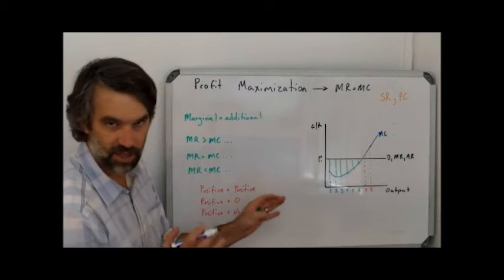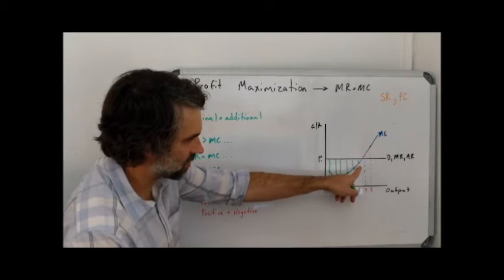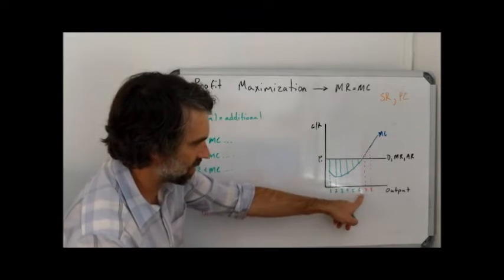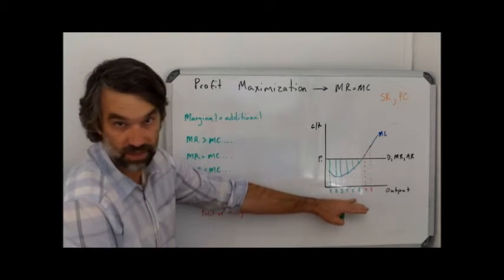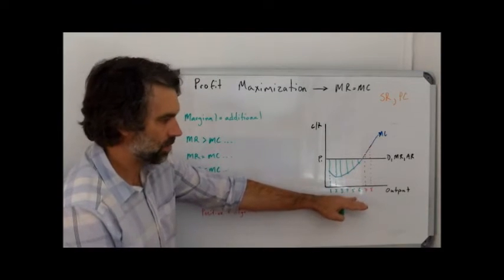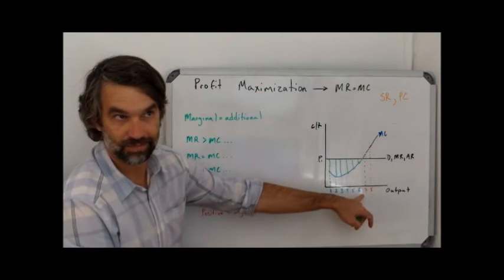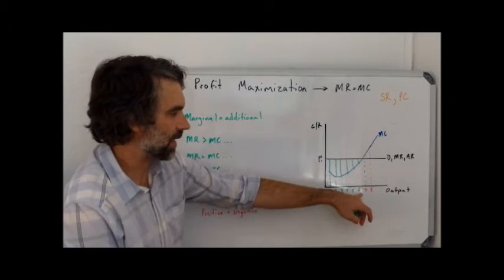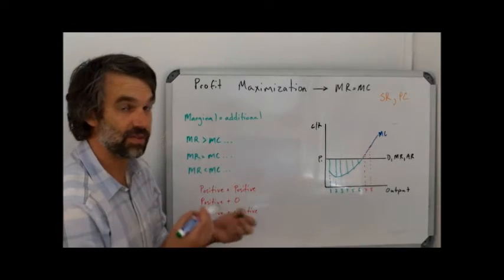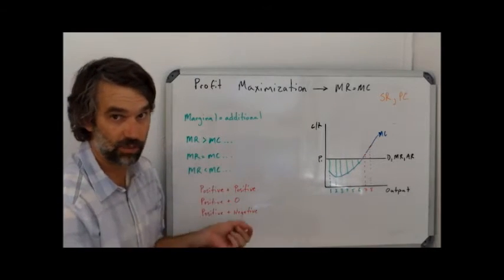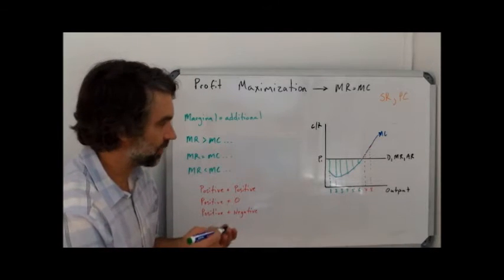Now, and I actually did this on purpose, you see that my point of profit maximization falls somewhere between a quantity of six and a quantity of seven. So if I could divide it, if maybe my output is measured in kilograms, maybe I could make another 0.3 kilograms and make a little bit more profit. Keep in mind, whenever we do this, there's a bit of a fallacy in only using whole numbers. It sometimes makes the math look a little bit weird.